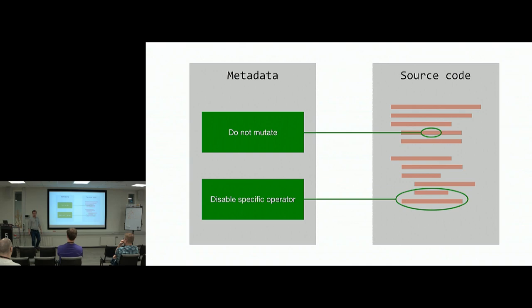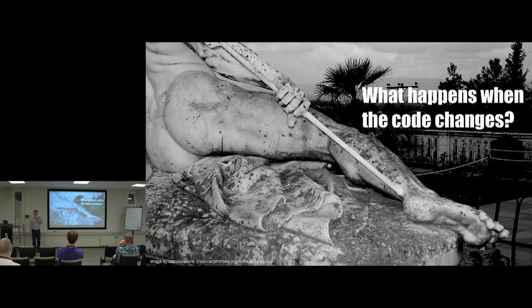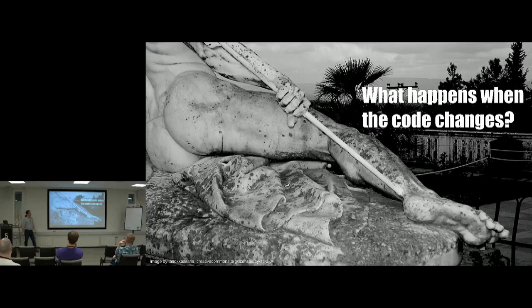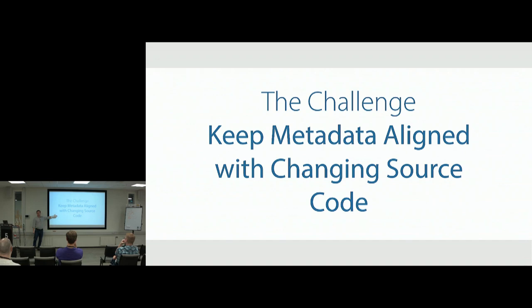What's the problem with this approach? What's your intuitive take on why this is hard? Source code changes. That's the Achilles heel: how do I keep my metadata pointing to the right piece of code as it changes? I need some way to update the file. I can do it by hand, but that's tedious — we want a computer to do that hard work. That became the crux of the issue: how to keep the metadata aligned with changing source code.